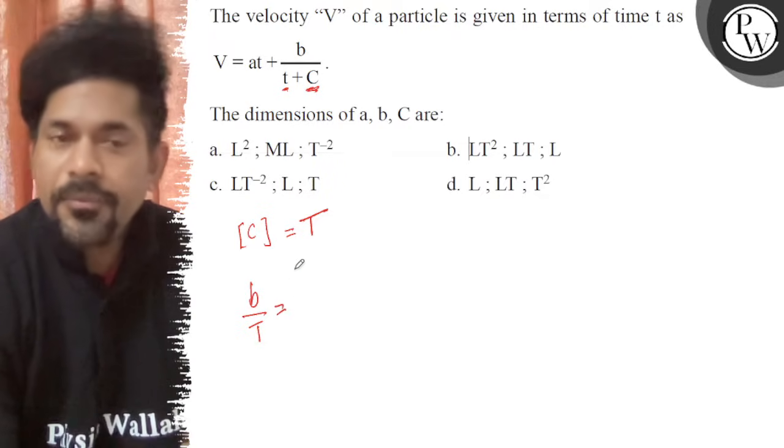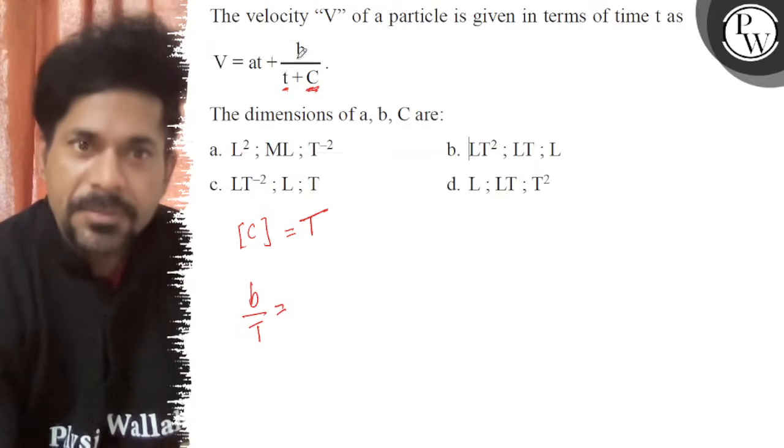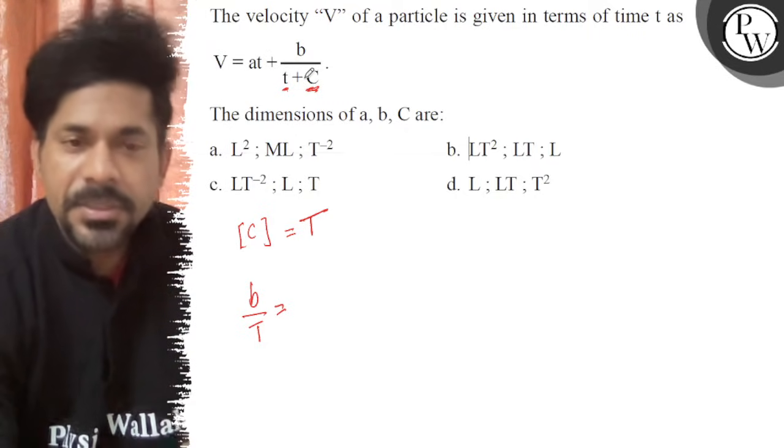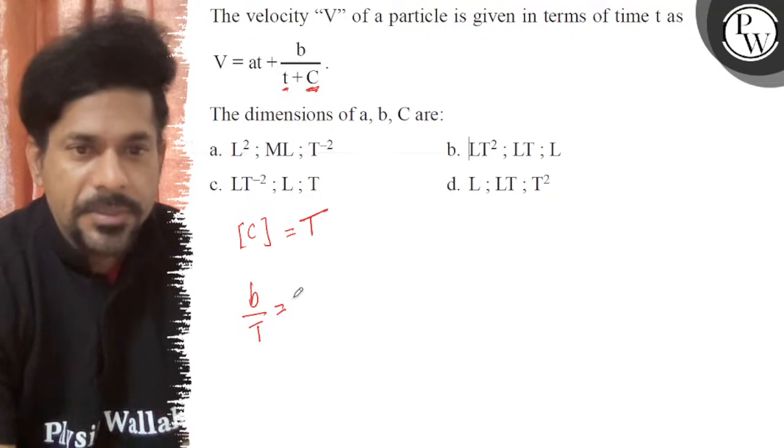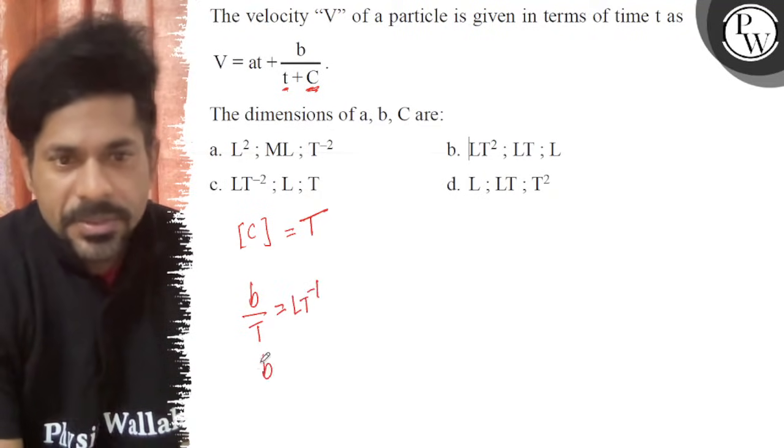That should equal meter per second. Each term—at, b/t, and c—is velocity, which is meter per second or LT^-1. So b is length, L.